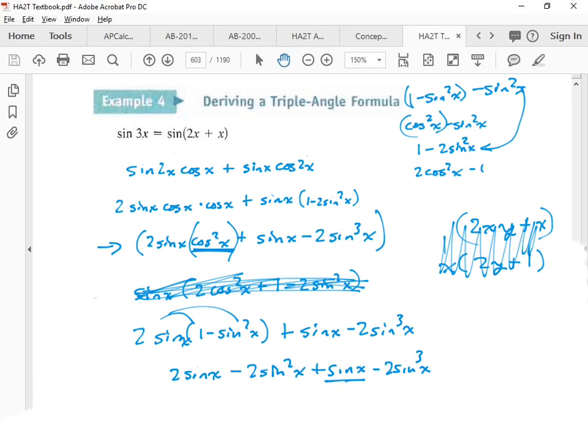Now we're gonna add this guy and this guy together. So that's three sine x minus two sine squared x minus two sine to the third x.